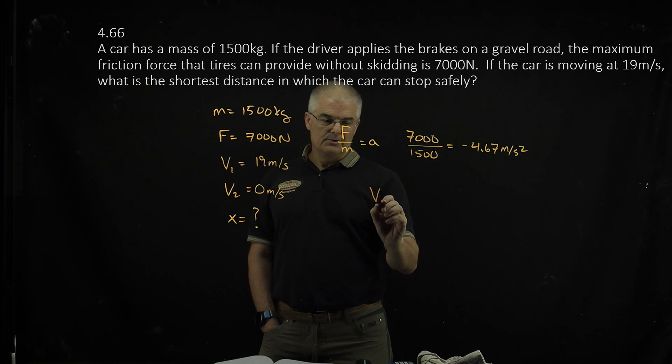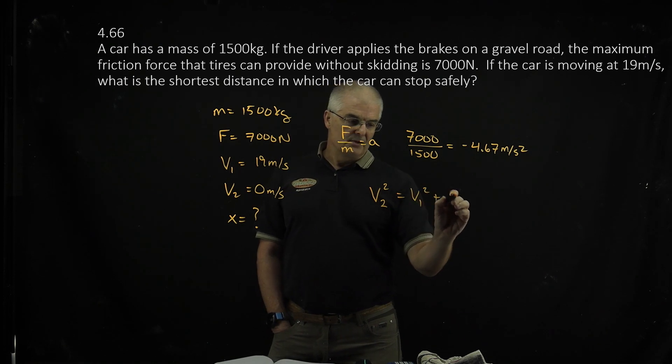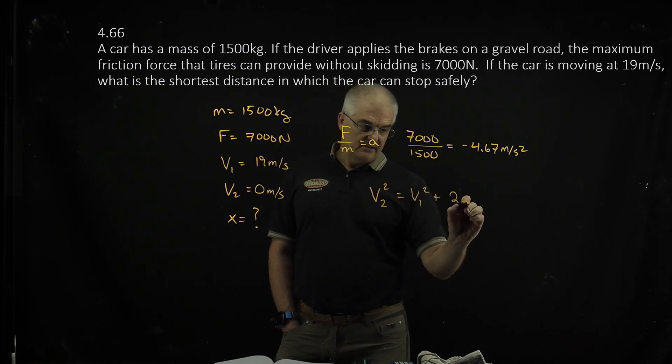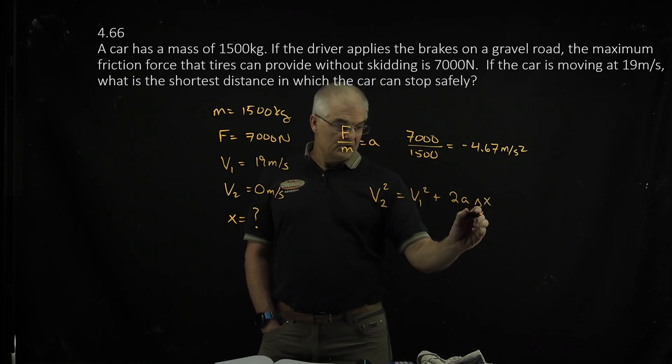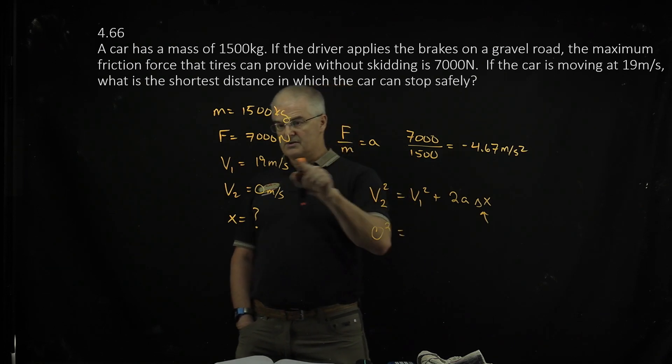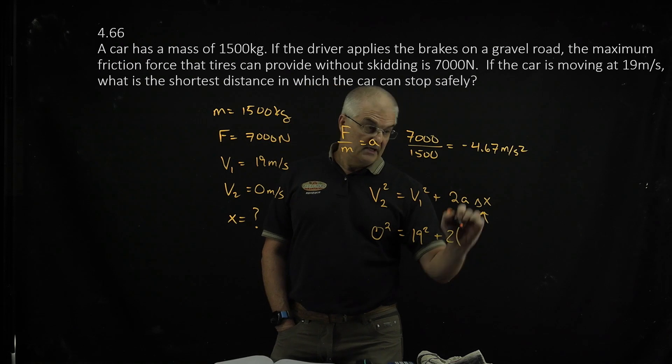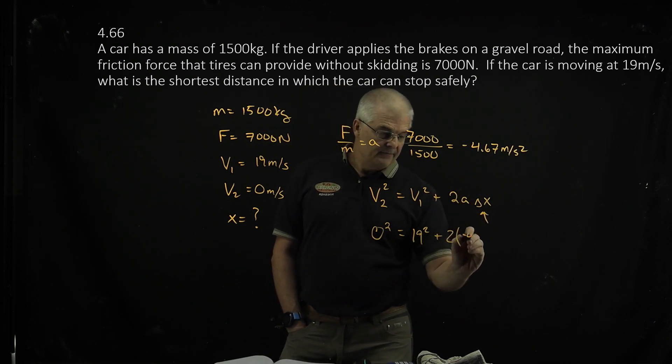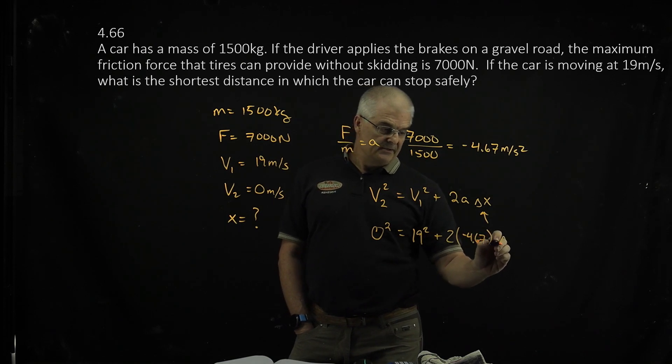The equation we're going to use is V2 squared, final velocity, equals V1 squared plus 2 times the acceleration times the change in the X. Now this is what we're solving for. So V2 is 0 squared equals V1 squared, 19 squared plus 2 times negative 4.67. That's why we had to do this part first, times delta X.